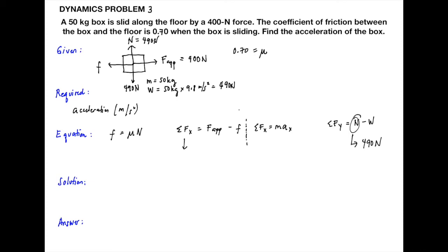Since the coefficient is unitless, the Newton units cancel. Rounding to two significant figures, the coefficient of kinetic friction is 0.21. This is the value for the coefficient of kinetic friction between the box and the floor.